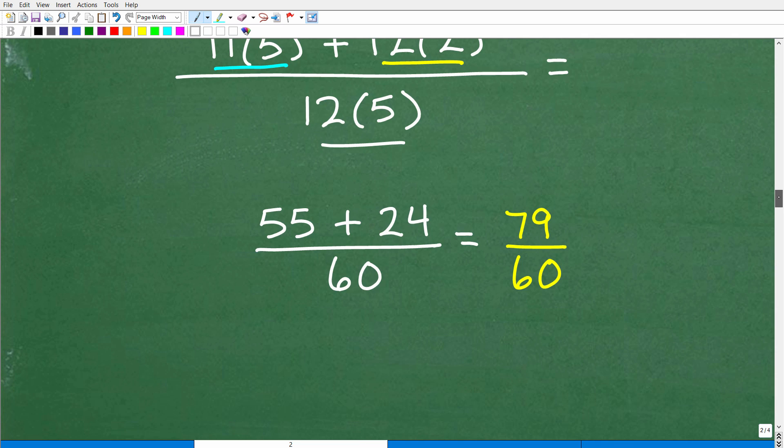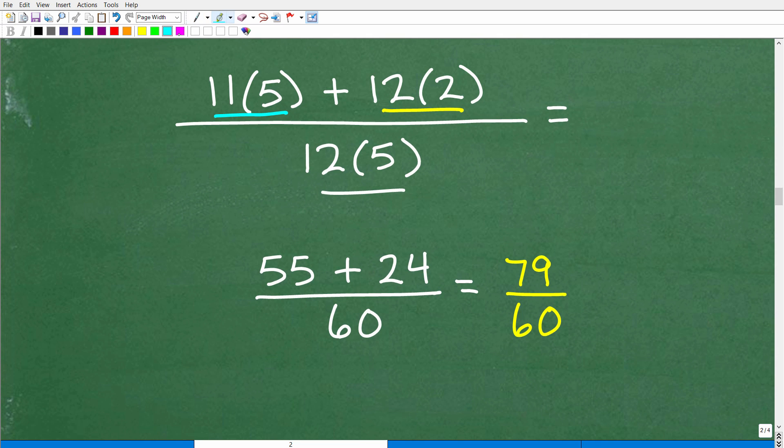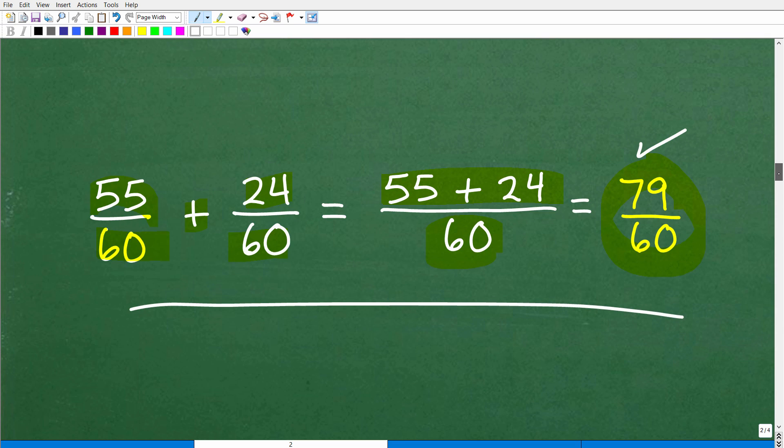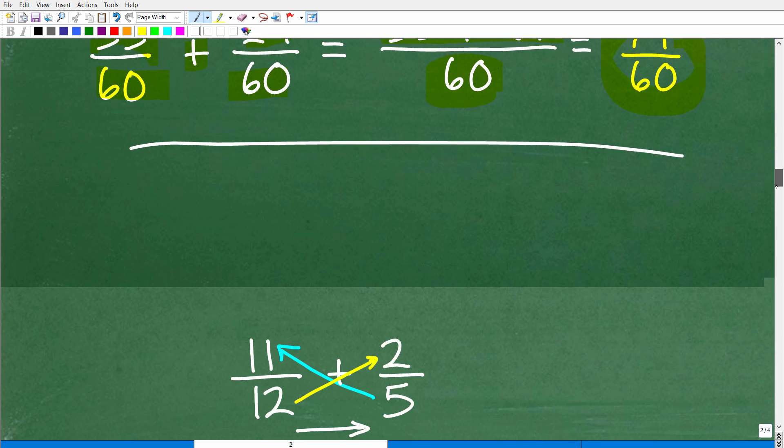Let's go ahead and simplify that. So 11 times 5 right here is, of course, 55, plus 12 times 2 is 24, over 12 times 5, which, of course, is 60. And look at this. 55 plus 24, that's 79 over 60. It's exactly what we had right there. And it took me all of, like, 10 seconds to do. It is so easy to use this bowtie method.